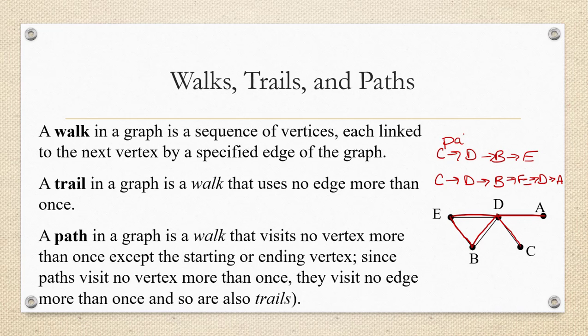Now let's suppose that I extended that walk through the graph and went C to D to B to E and then after E went to D and then to A. This new walk is also a trail because it doesn't cover any edges more than once, but it's not a path. So this guy up here, this is a path, it's a trail, and it's a walk. It's all three. But this guy, this is a walk and a trail, but it's not a path because it repeats vertices.